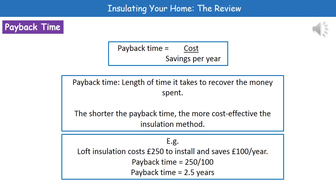For example, loft insulation costs £250 to install, and that will save £100 a year. So, to work out our payback time, all we've got to do is cost divided by savings per year: £250 divided by £100 gives us two and a half years to have made back our money. So, this one is a very cost effective installation method.